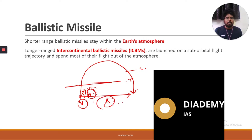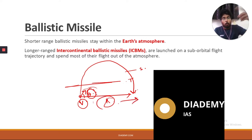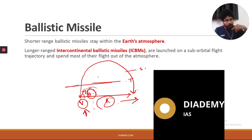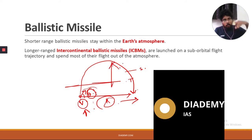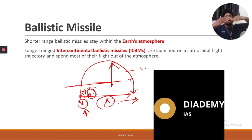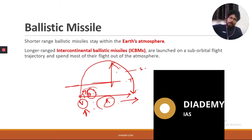When the target is at a long distance, we have to give a greater initial velocity. With that greater initial velocity, the missile goes to great heights — it exits the atmosphere. Exo-atmosphere means outside the atmosphere. So the missile travels out of the atmosphere and comes back in again because the range is long.